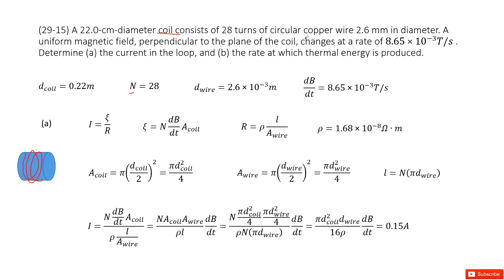So now the wire's diameter is given, so we write it there. And also it tells us the magnetic field which is perpendicular to the coil changes with time. The change rate is this quantity: 8.65 times 10 to the power negative 3 tesla per second. So you can write it as dB over dt.